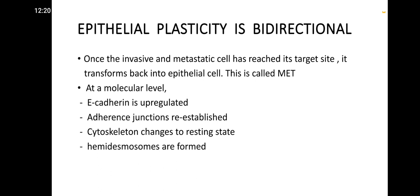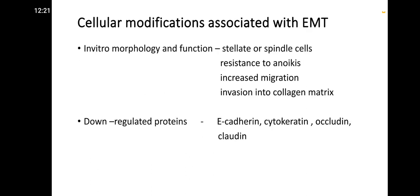Epithelial plasticity is bidirectional. Once metastatic cells reach their target site, they transform back into epithelial cells — this is called mesenchymal-epithelial transition (MET). At a molecular level, E-cadherin is upregulated, adherens junctions are re-established, the cytoskeleton returns to resting state, and hemidesmosomes are formed.